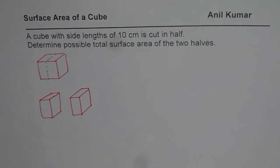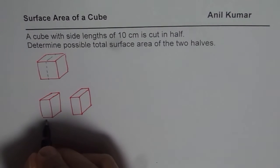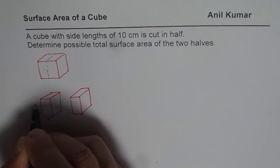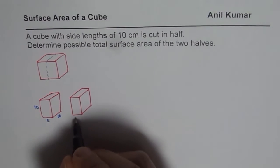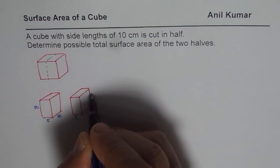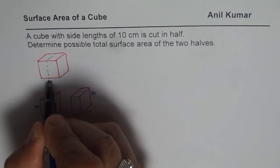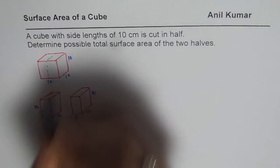For easy calculations, we will assume that these sides are 5 each, but that length, those are 10. So this is 5 and 10. But initially we had 10, 10 and 10.